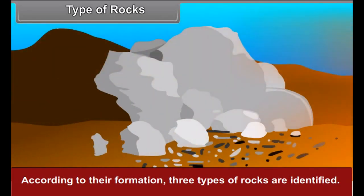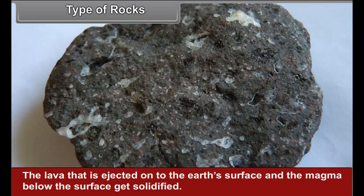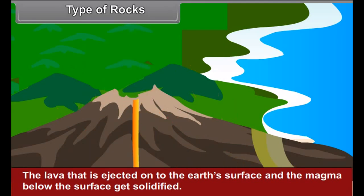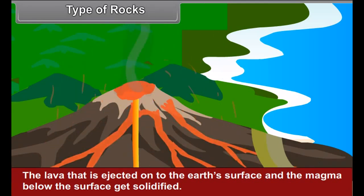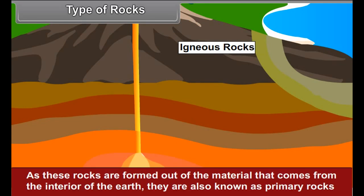According to their formation, three types of rocks are identified. Igneous rocks: the lava that is ejected onto the Earth's surface and the magma below the surface get solidified. Rocks formed through this process are called igneous rocks. As these rocks are formed out of the material that comes from the interior of the Earth, they are also known as primary rocks.